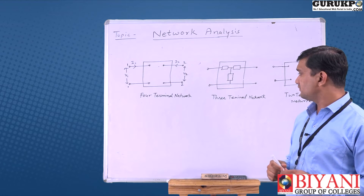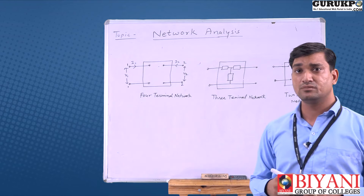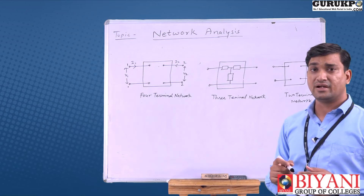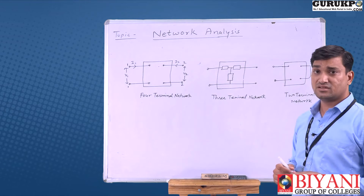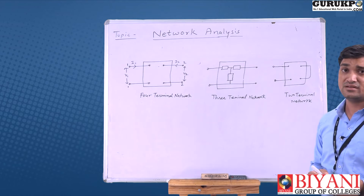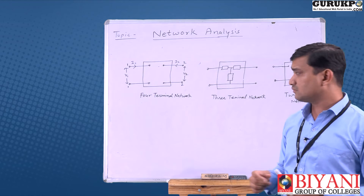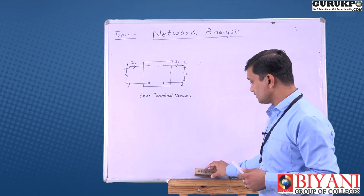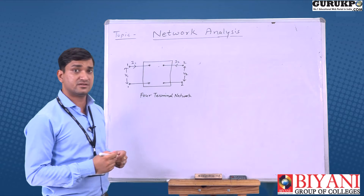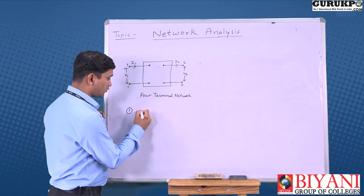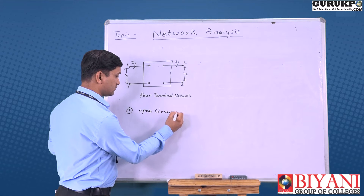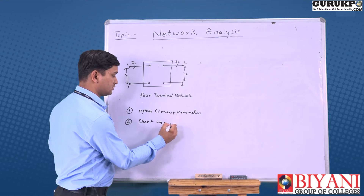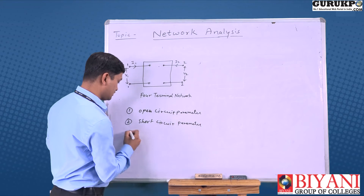So these are the different networks: the four terminal network has two input terminals and two output terminals present. In the three terminal network, one terminal is combined. When two terminals are combined it is known as the two terminal network. So first we discuss about the four terminal network.